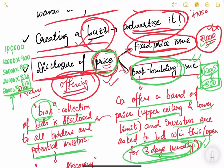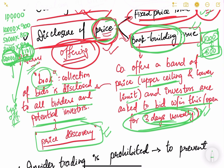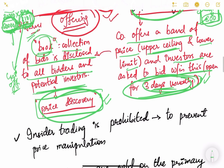Continuing the example: another 20,000 shares are bid at 810, completing the total of 1 lakh shares — 10,000 plus 50,000 plus 20,000 plus 20,000. The cutoff price is 810, which is declared to all bidders and potential investors. This process is known as price discovery — the company had fixed a band of 800 to 1200, and through bidding it discovered that people are willing to pay 810. In this way the company discovers and declares the price.